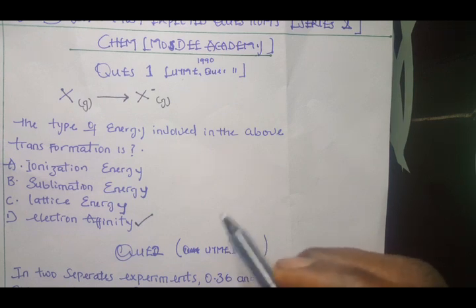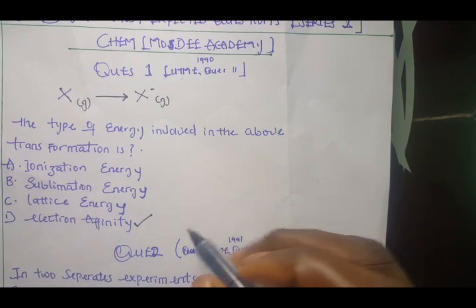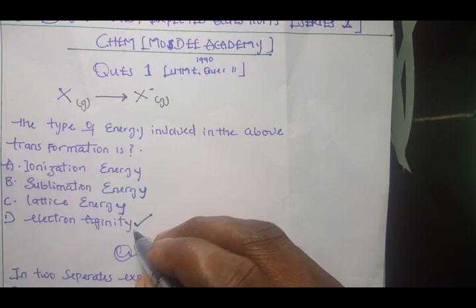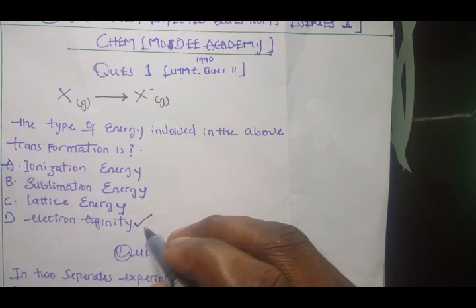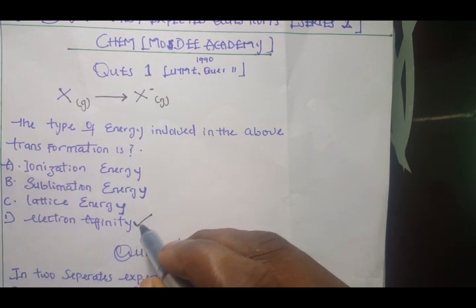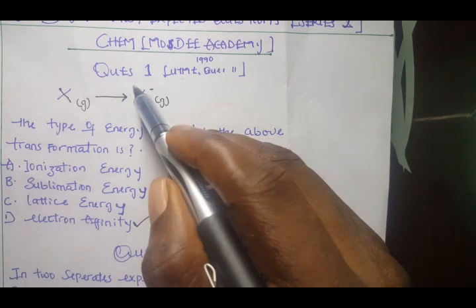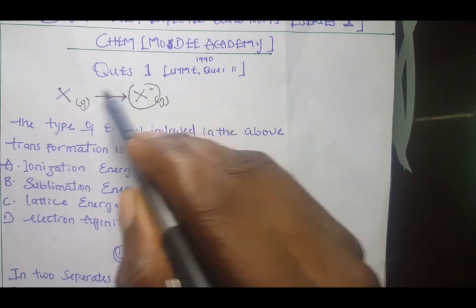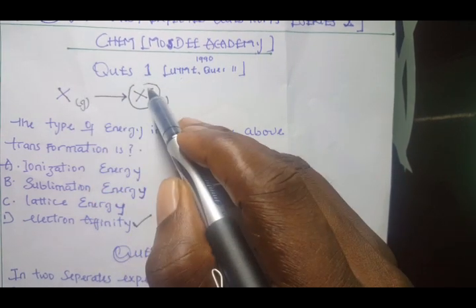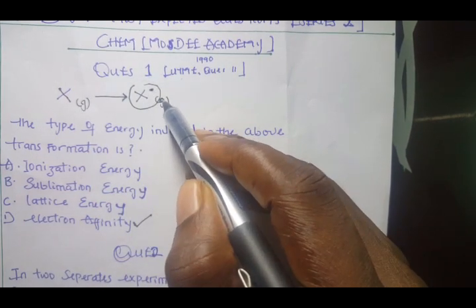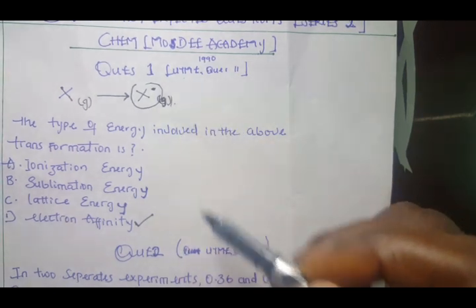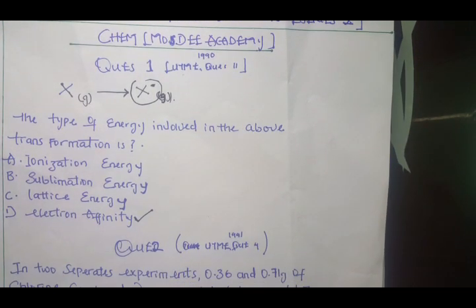One mole of an atom completely from a gaseous atom as you can see here. So now electron affinity is the energy charge when one mole of a substance forms a gaseous atom here. Now its oxygen number is zero. It has lost electron to form a gaseous atom. So we go for electron affinity.